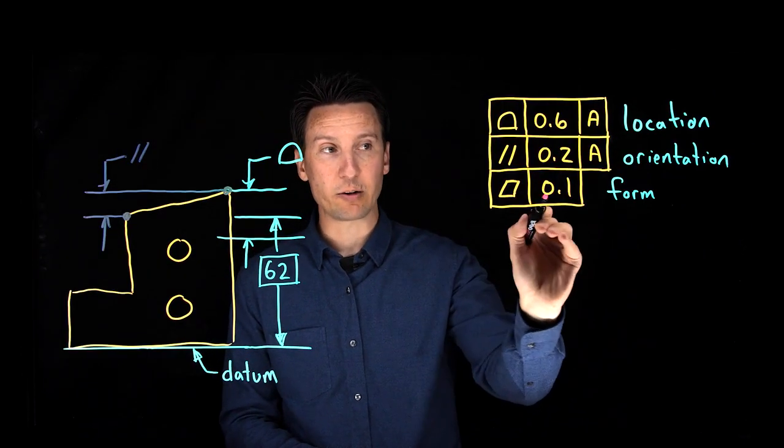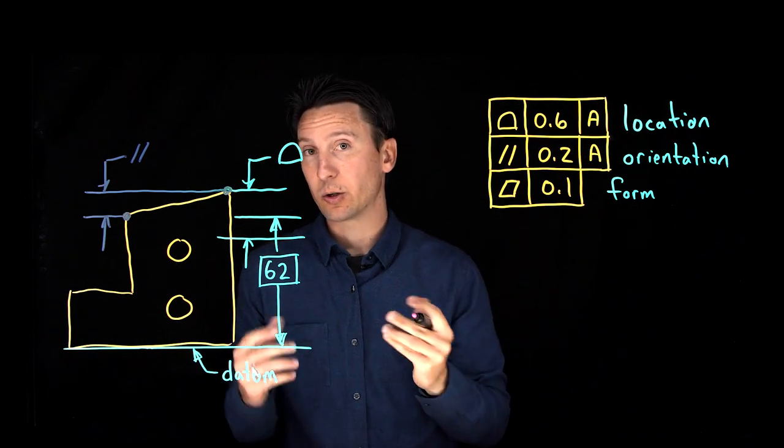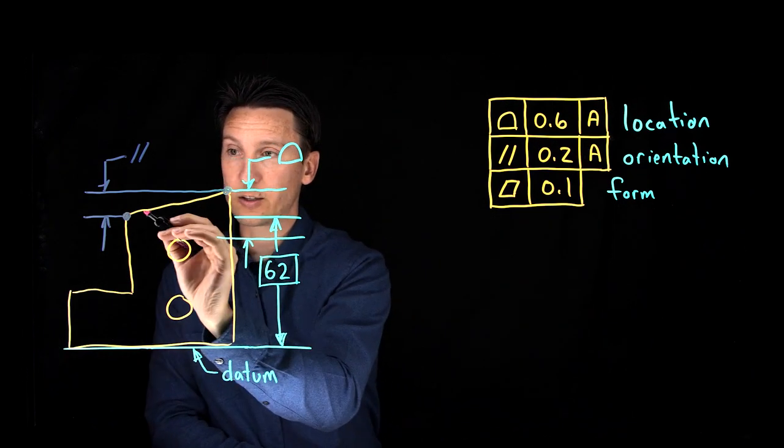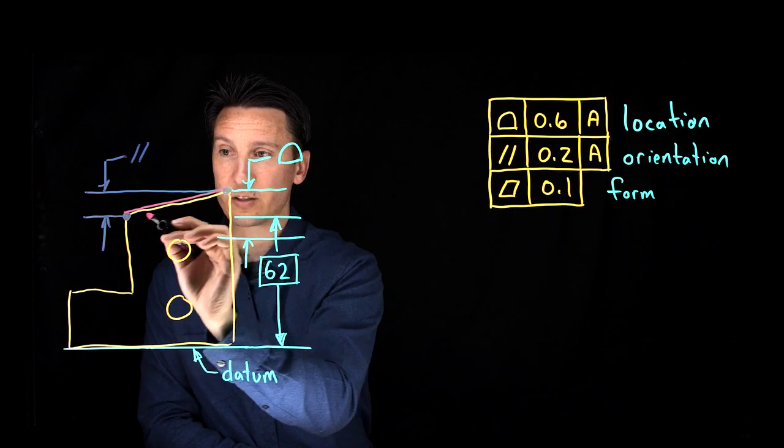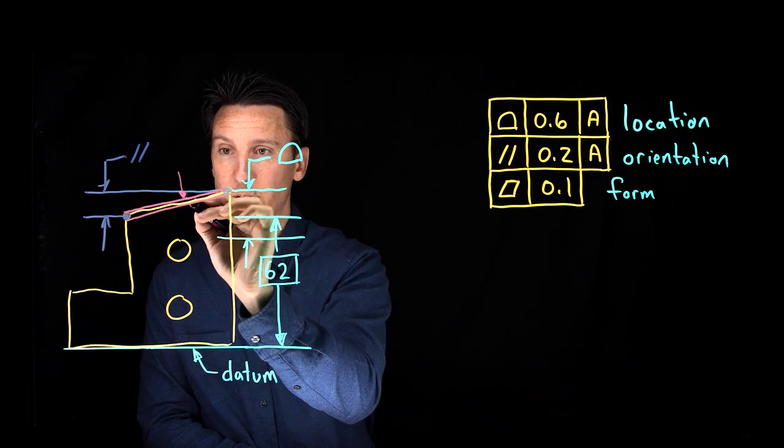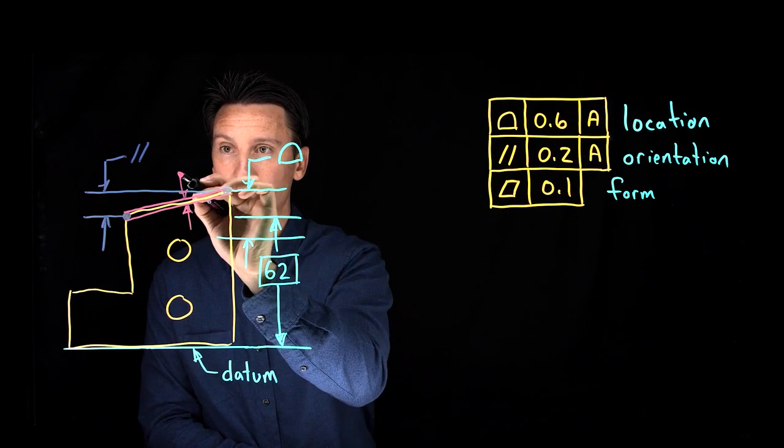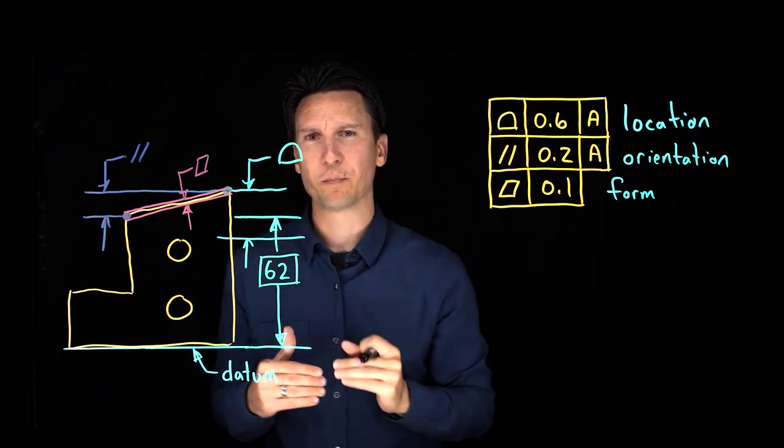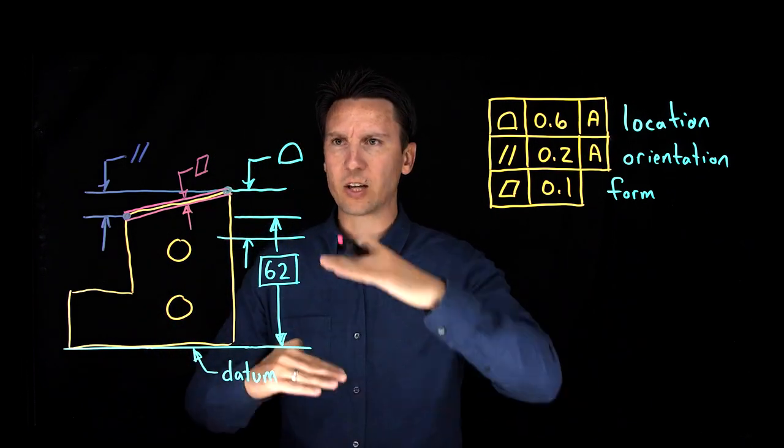Now the last one is the form tolerance and form has no datum to it so it's just going to be to itself and this one actually has a really good form. The form is going to be the smallest pair of planes that would be best fit to itself. So you see how the tolerance zone is the same.